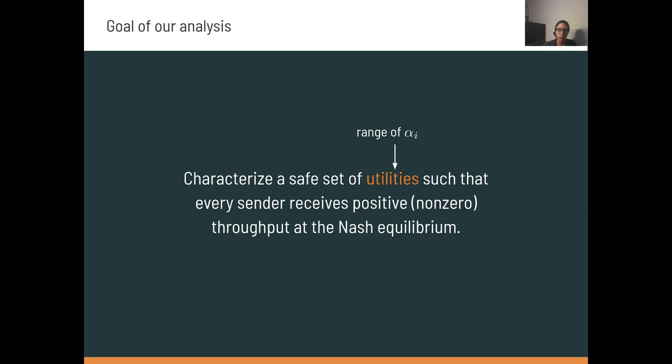The goal of our analysis will be to characterize sets of utilities that play well together in the network, in that even when senders are behaving selfishly, no one should choose to send zero packets. In our example, the agents differ on their delay sensitivity, which is defined by this parameter alpha. So we'll try to derive a range of alpha values that will be compatible together.